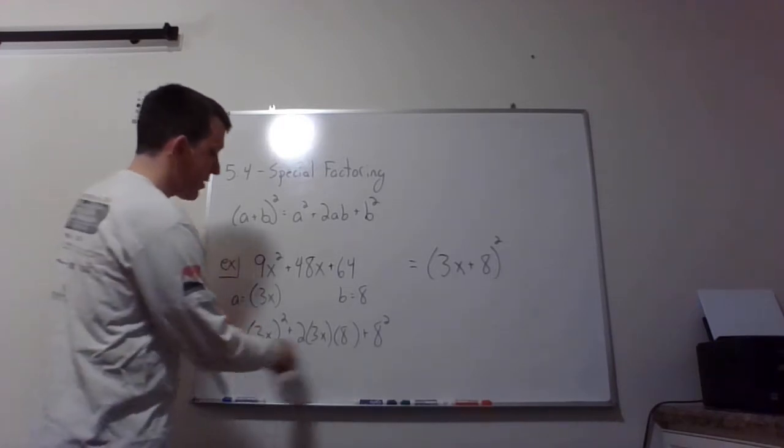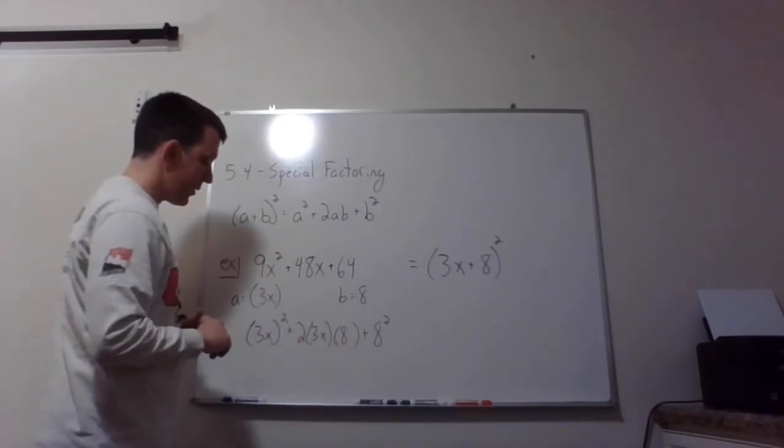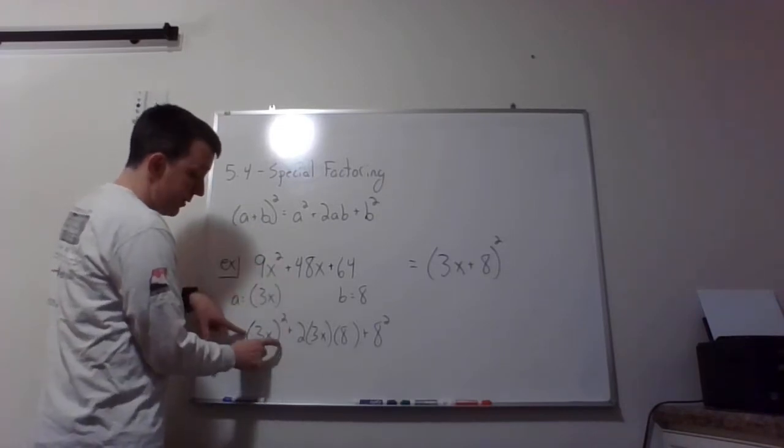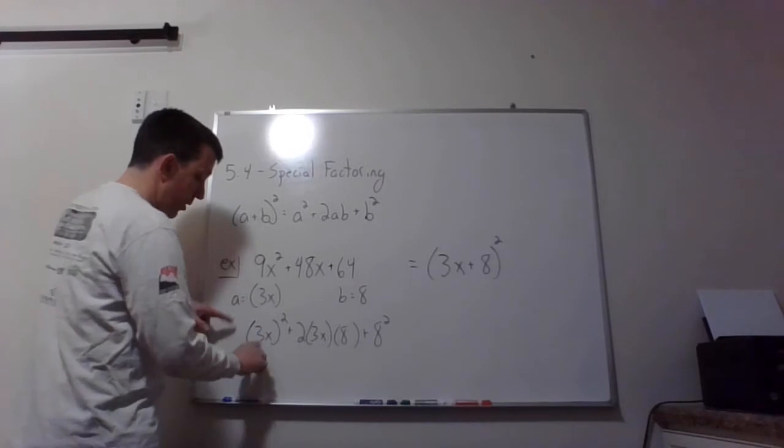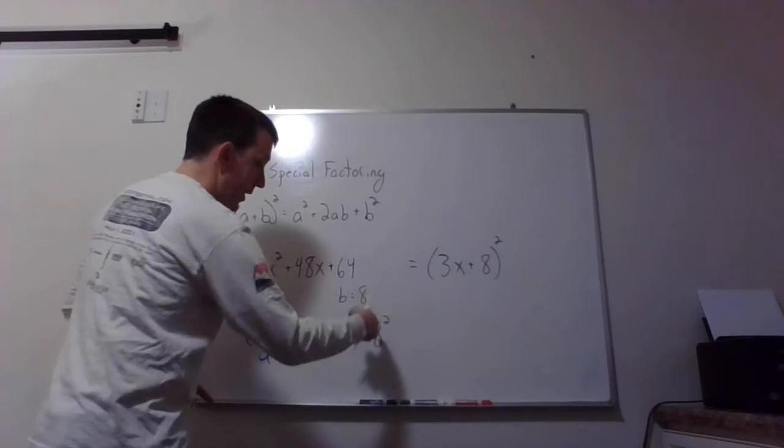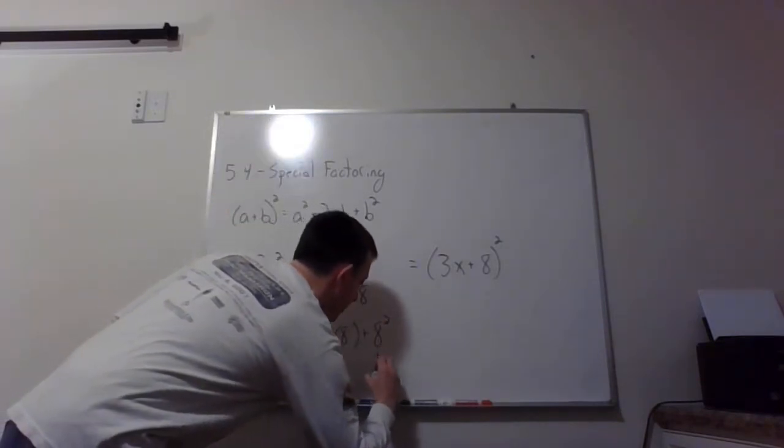Now those two things being squares is not foolproof. It does not necessarily mean we have the pattern. We do here, but it doesn't necessarily mean it, so we do actually have to kind of check it all out and make sure that it works. So what we're saying is that 9x squared is the same as 3x to the second and that that's what we're calling a. We're saying that 8 to the second is 64 and that's what we were calling our b.